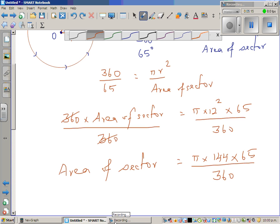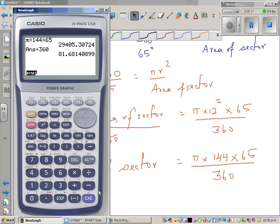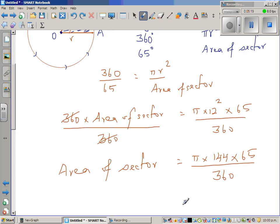So the area is 81.68 centimeter squared. So this is what was the answer. The area is 81.68 centimeter squared in 2 decimal places.